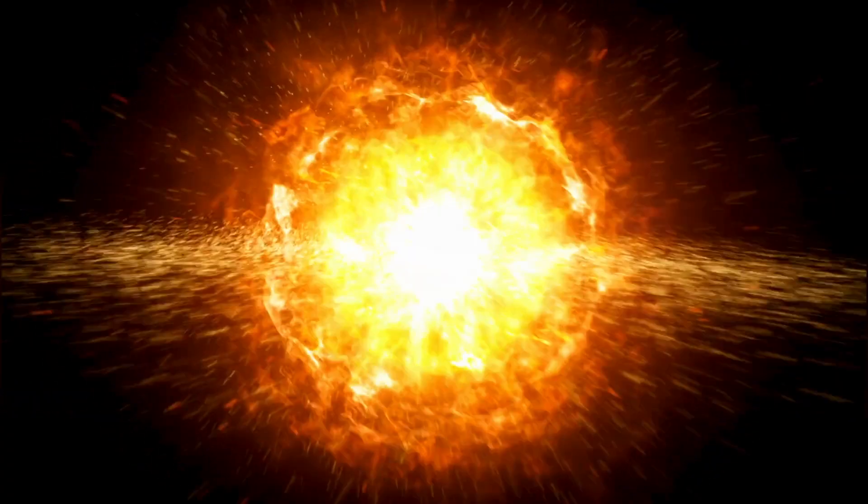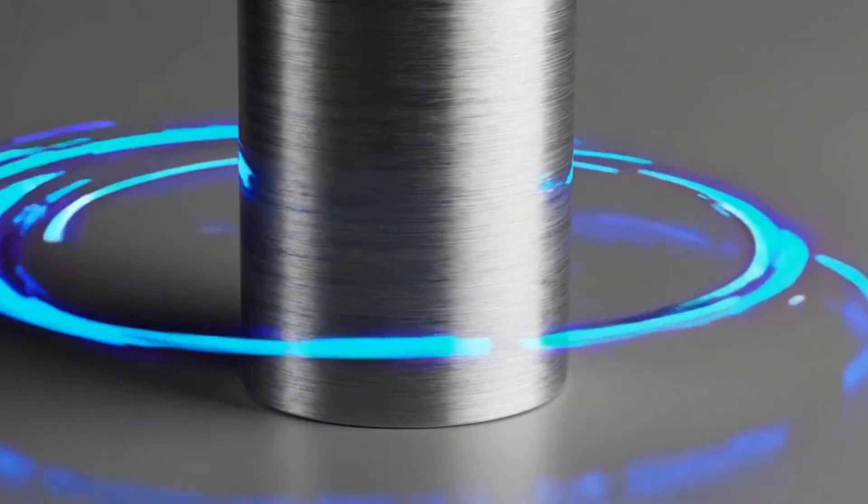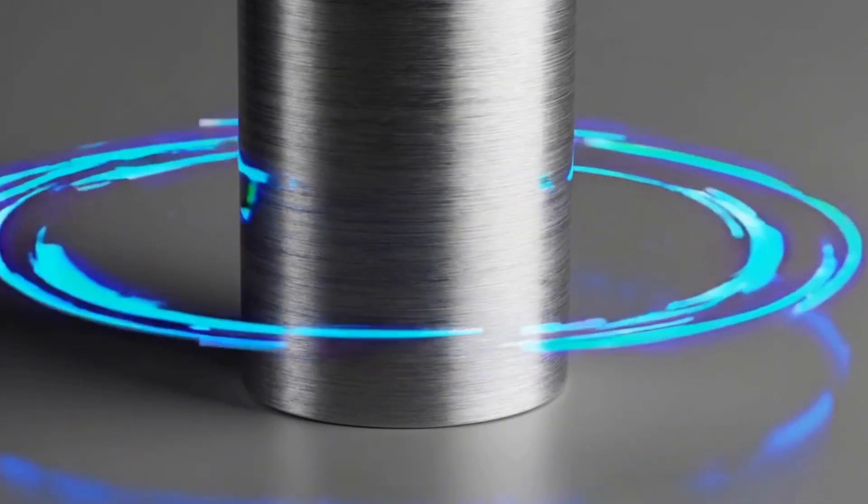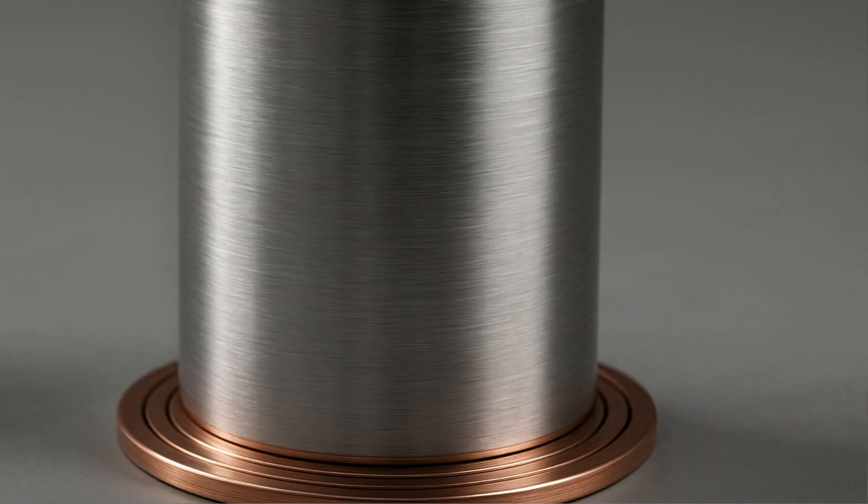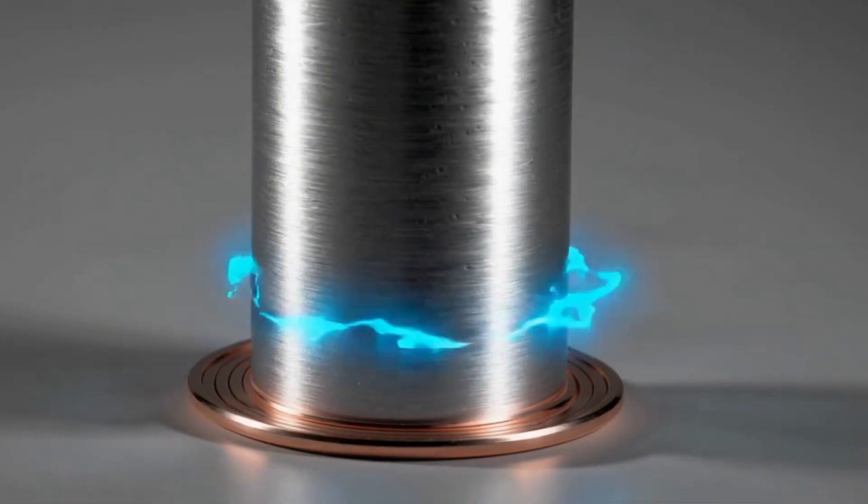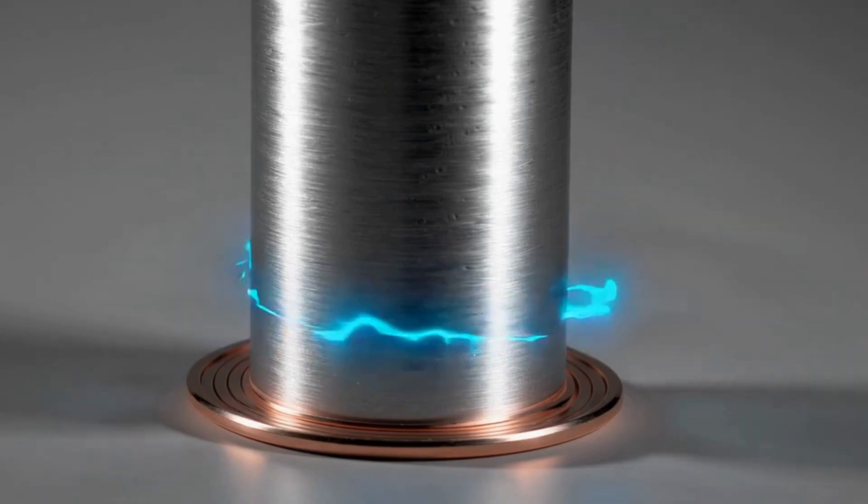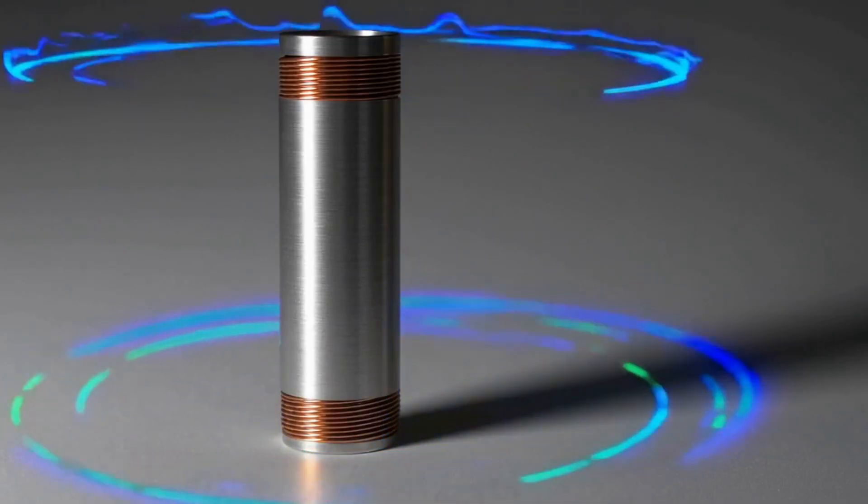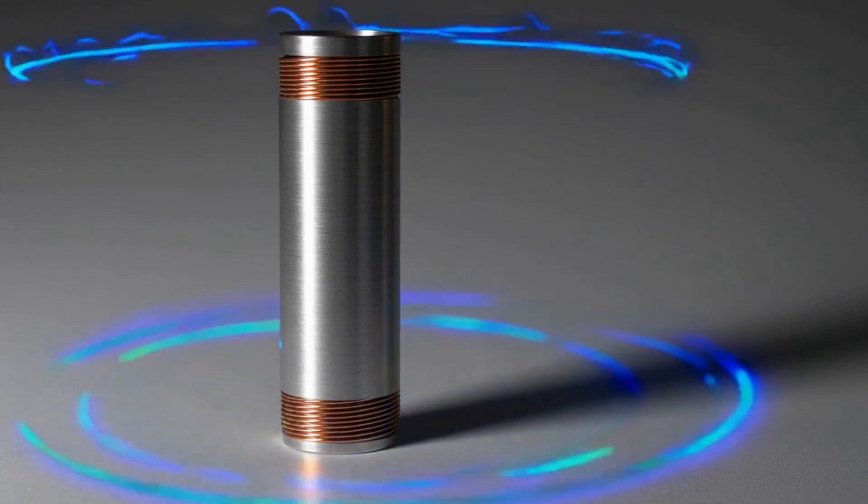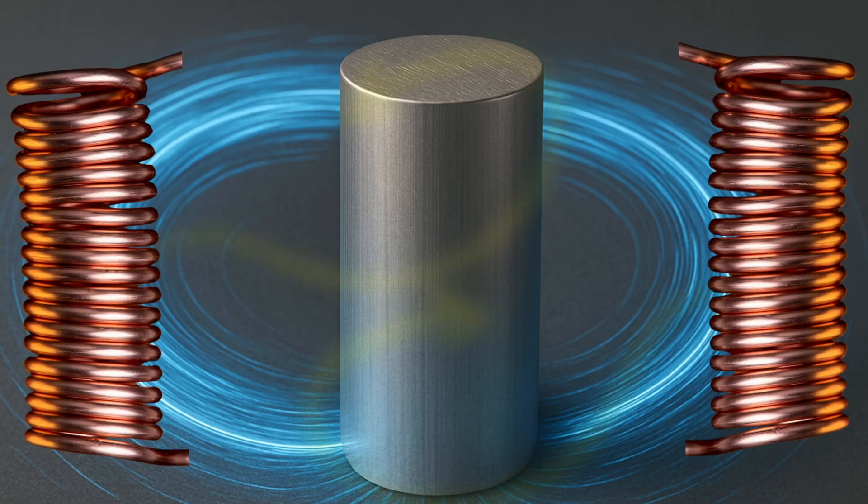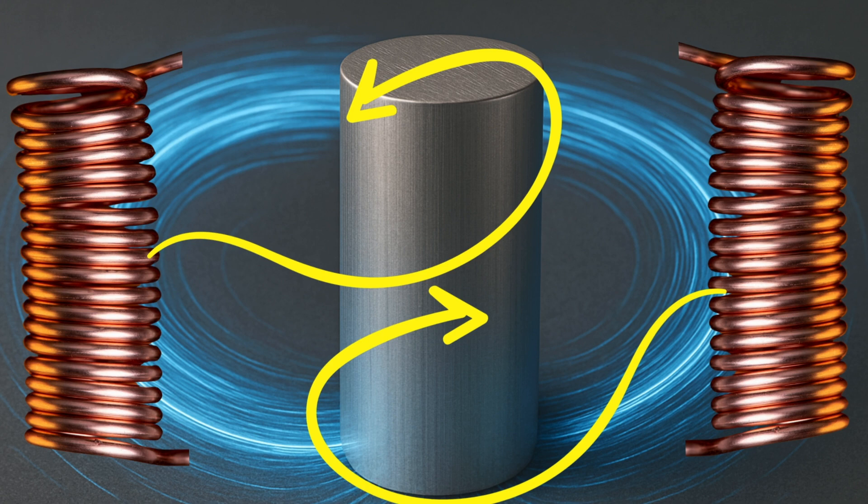When we examine the data obtained from the experiment, we see something remarkable. The scientists started the system with extremely low energy input. So low, in fact, that the signal they injected was even weaker than an ordinary radio wave. When this weak electromagnetic signal was delivered into the coils, the rotating cylinder inside the apparatus didn't absorb it. Instead, it returned the signal, amplified by drawing on some of its own rotational energy.